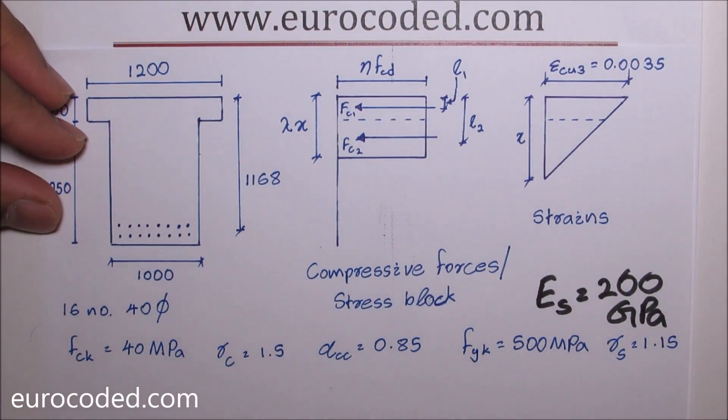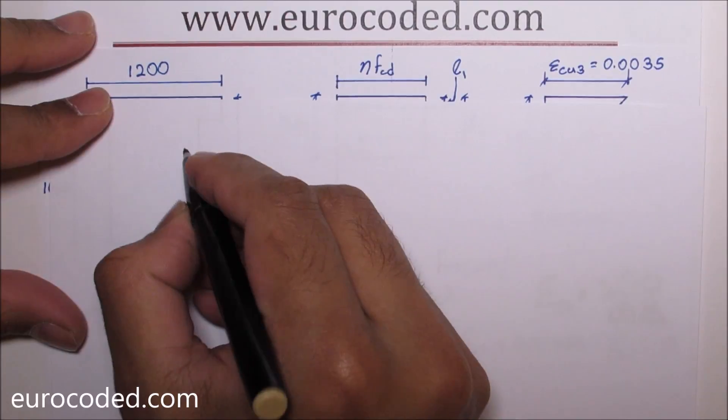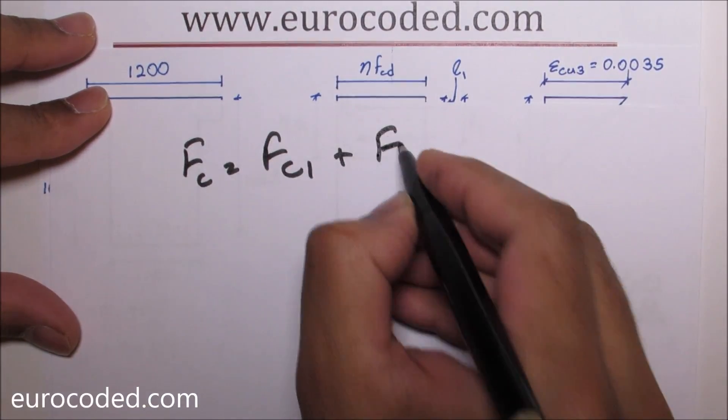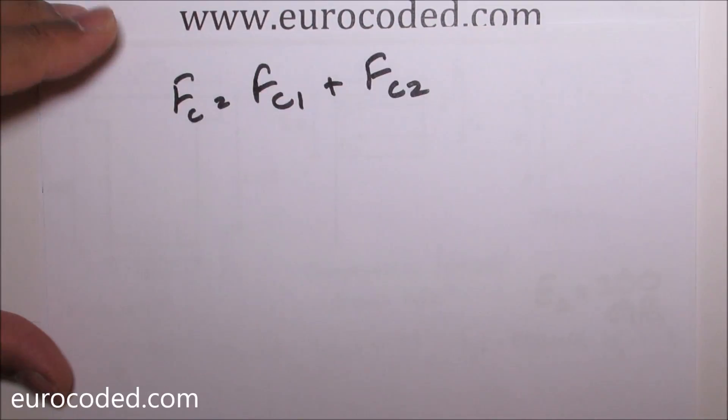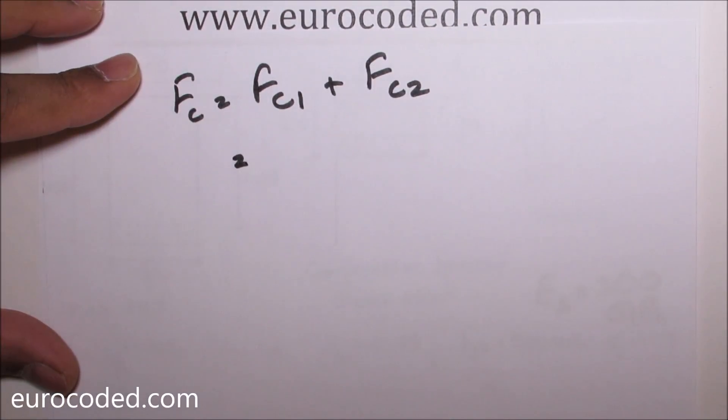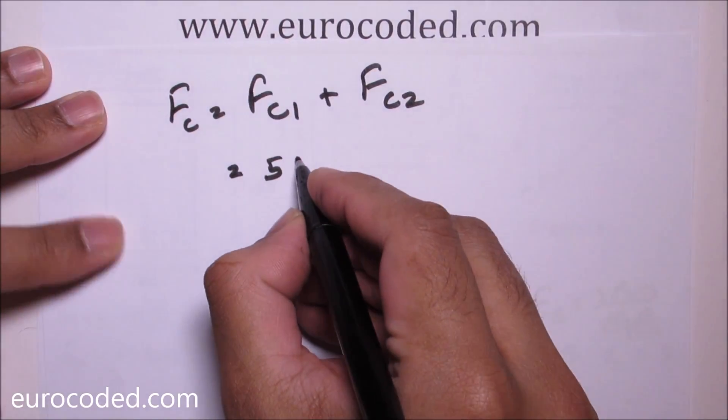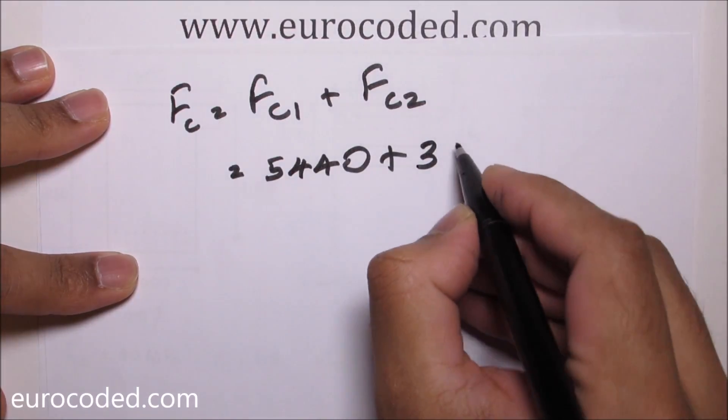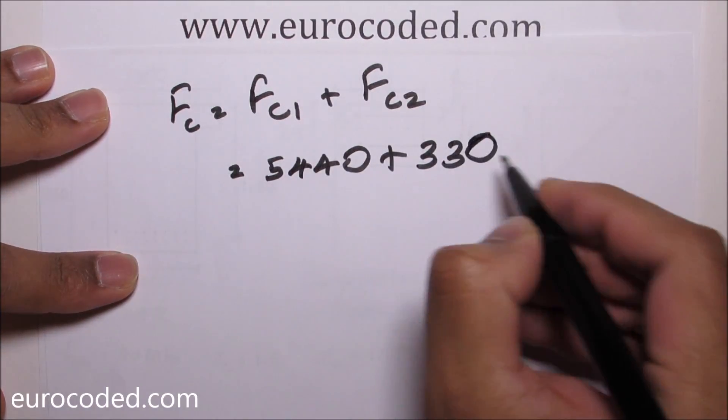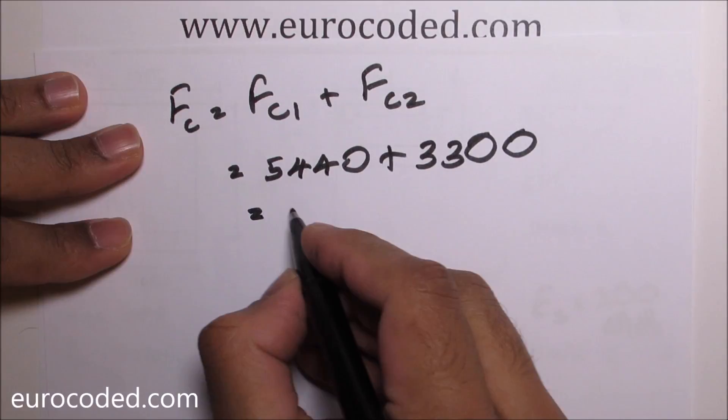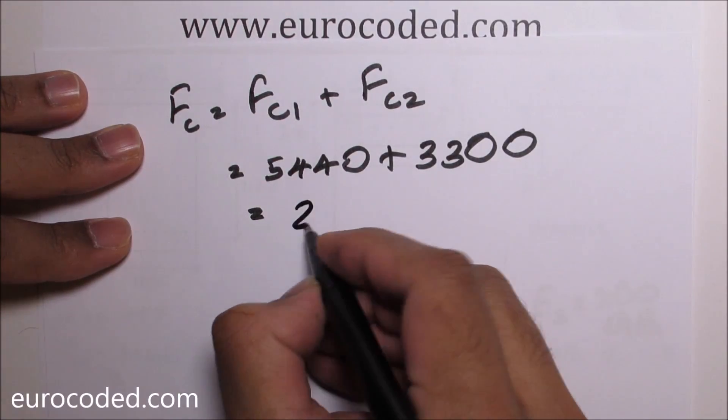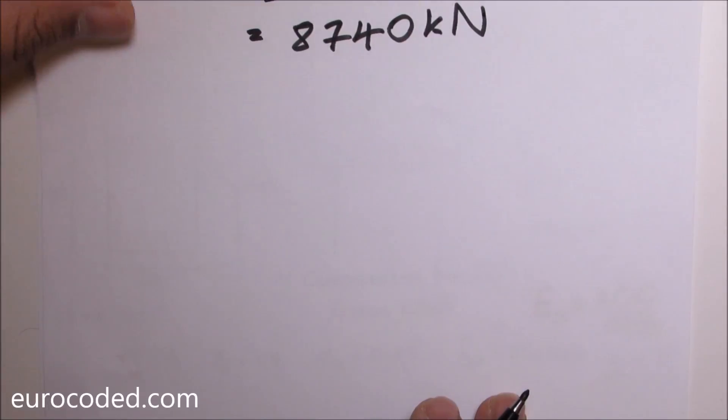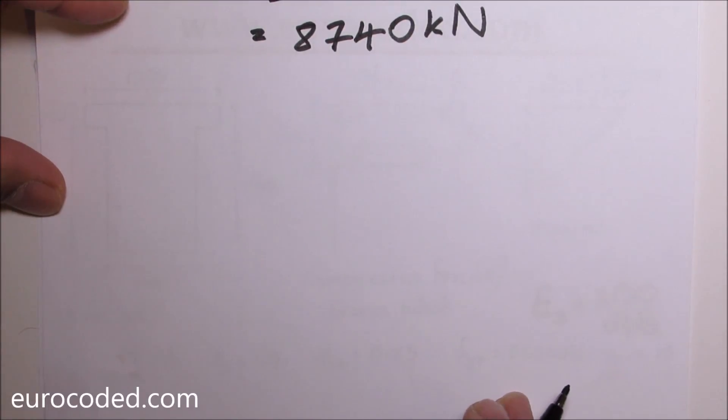Then we can calculate the total compressive force which is FC is equal to FC1 plus FC2 which is equal to 5440 plus 3302.7. This is equal to 8740 kN.